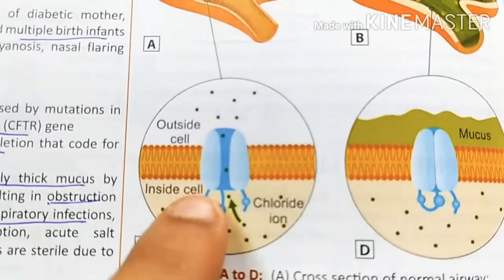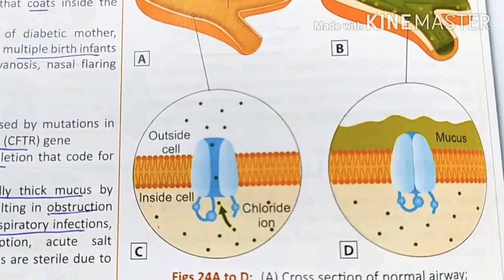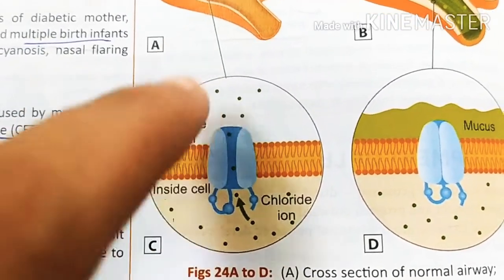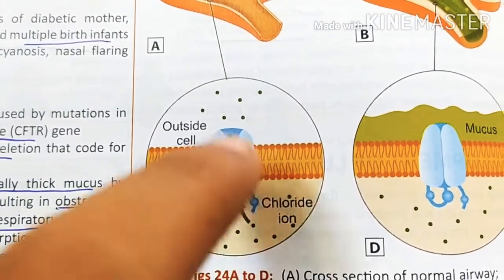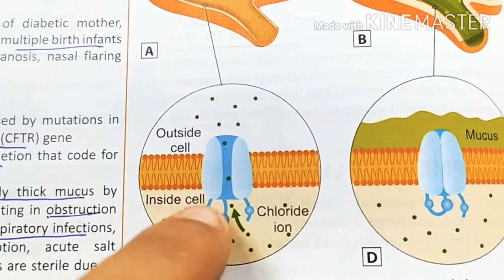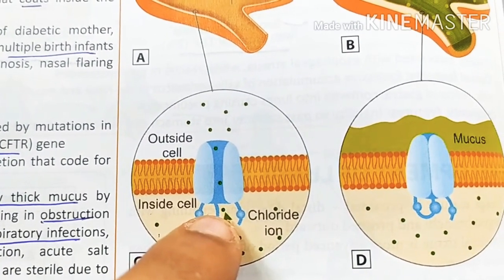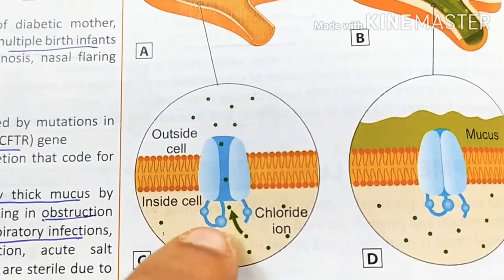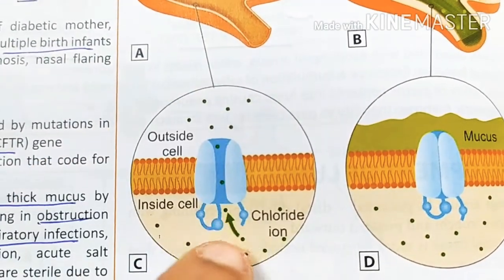This happens because the CFTR gene maintains channels outside and inside the cell — specifically chloride channels. These chloride channels cannot function properly because the regulator gene has been mutated.